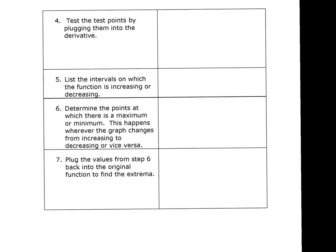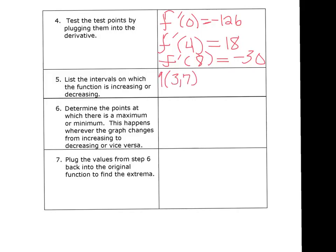Alright, so again, we get that f prime of 0 is negative 126. f prime of 4 is 18. So this is step 4. And f prime of 8 is negative 30. So from my picture on the previous page there, we're going to get that the intervals in which it's increasing or decreasing, well, it's going to be increasing on that interval between 3 and 7. So increasing 3 to 7. It's decreasing from negative infinity to 3. And, so union, 7 to infinity.